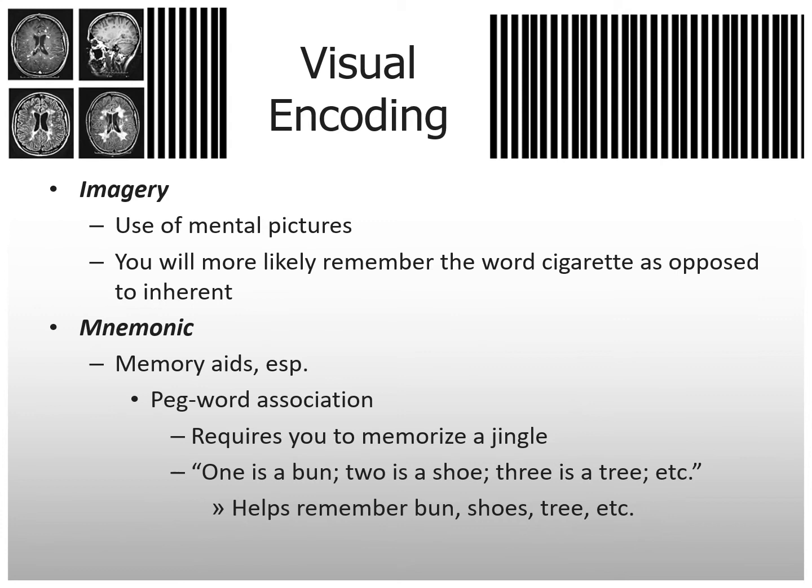They have those items memorized in a row, and then whatever the first word on a list is, they associate it with the peg. If the first word was 'yellow,' they think 'yellow bun' because they already have 'bun' memorized. You associate whatever you're trying to remember with the thing you already have memorized — that's peg word association.